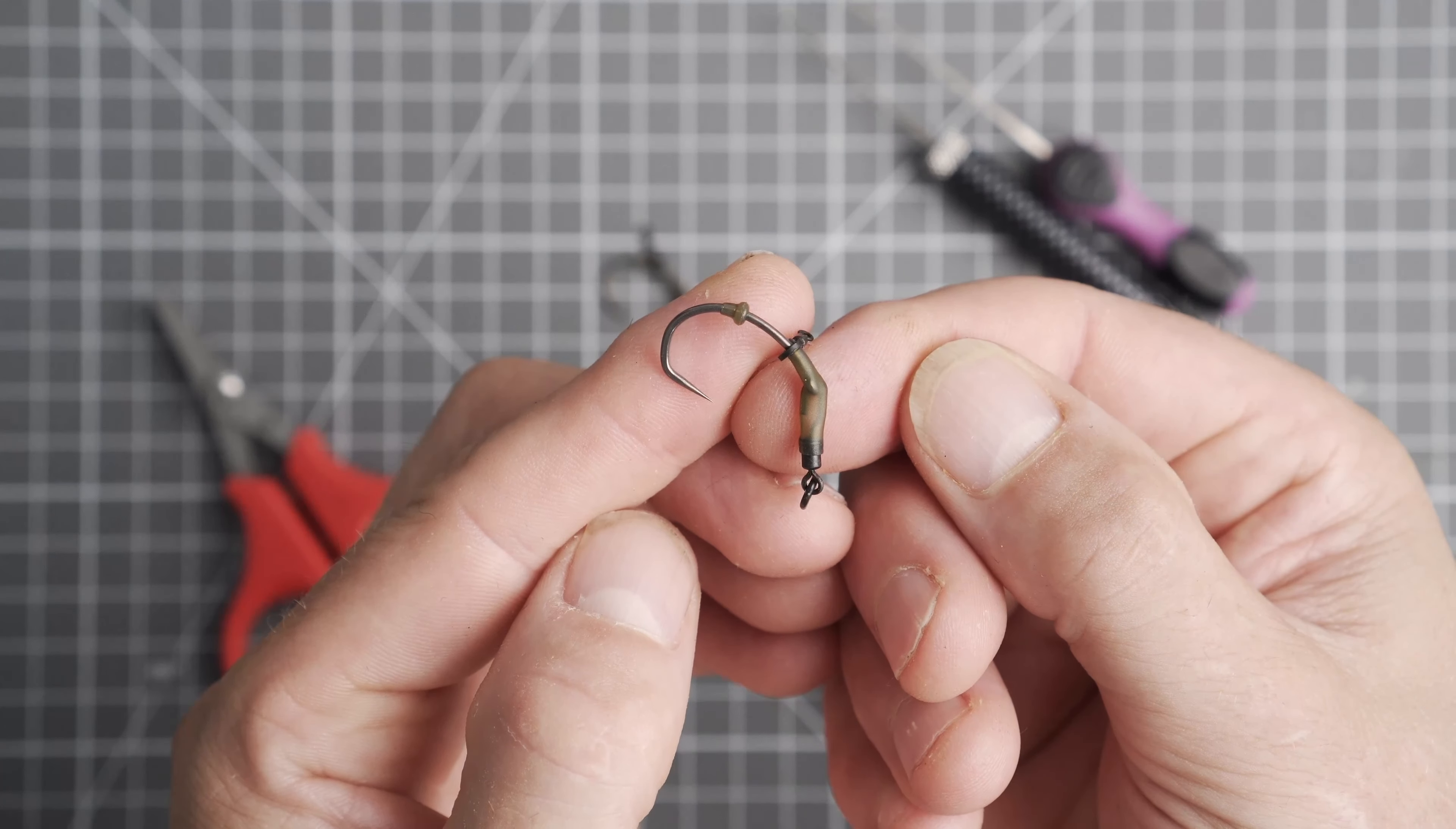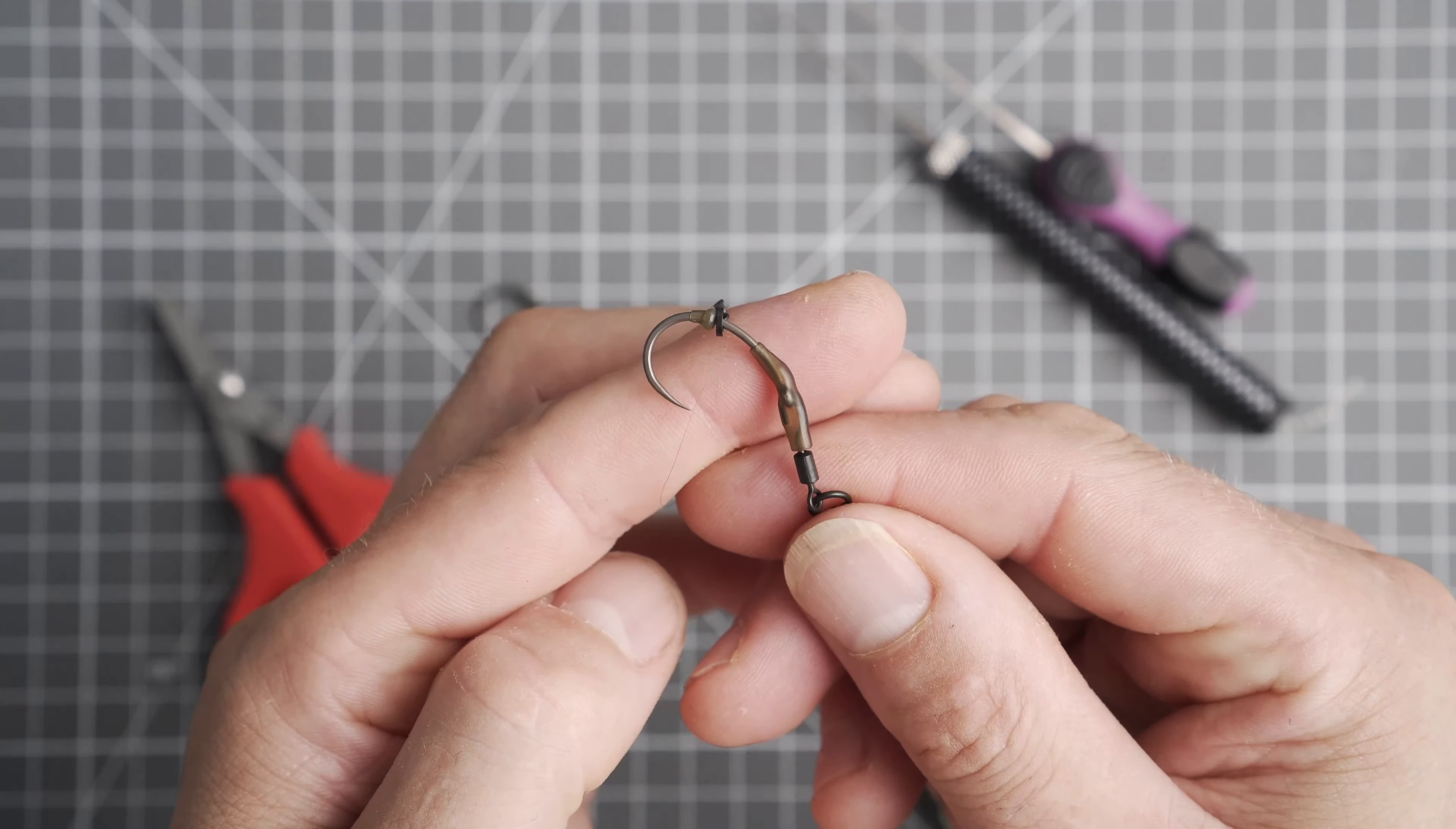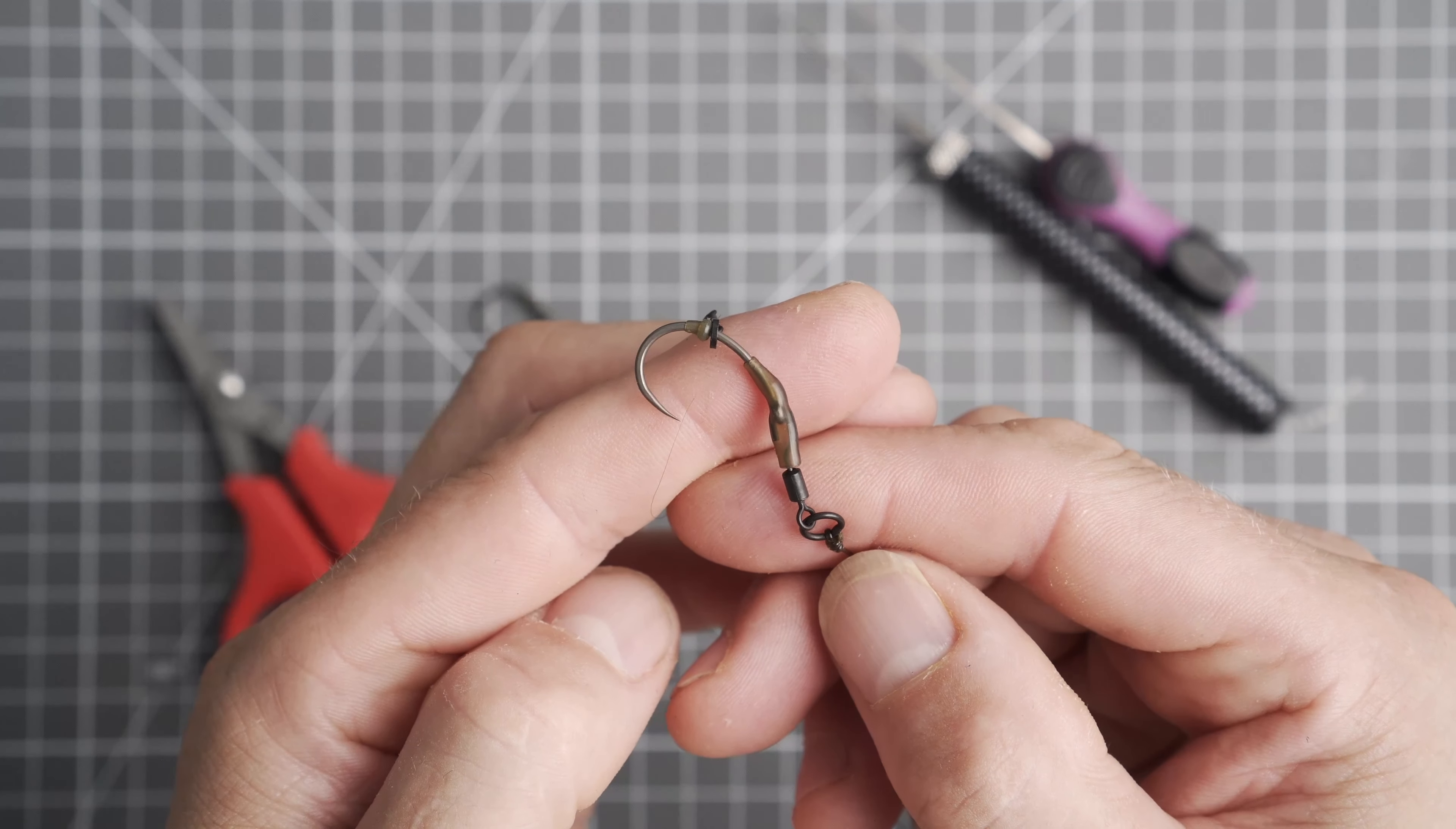Now we have two types of Klinger hooks: there's the Klinger SP and the Klinger BP. That's straight point and beak points.